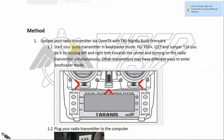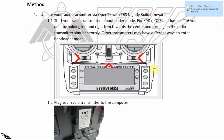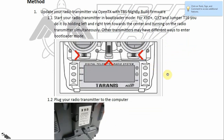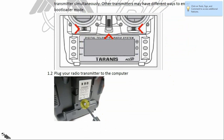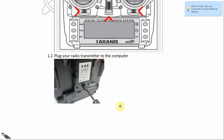The first step is to update your radio transmitter via the OpenTX program with the TBS nightly build firmware. First, you need to start your radio transmitter in bootloader mode. For older radio transmitters like the X9D Plus, QX7, or Jumper T16, you do it by holding the left and right trim towards the center while turning on your radio. Other radio transmitters may have different ways to enter bootloader mode.